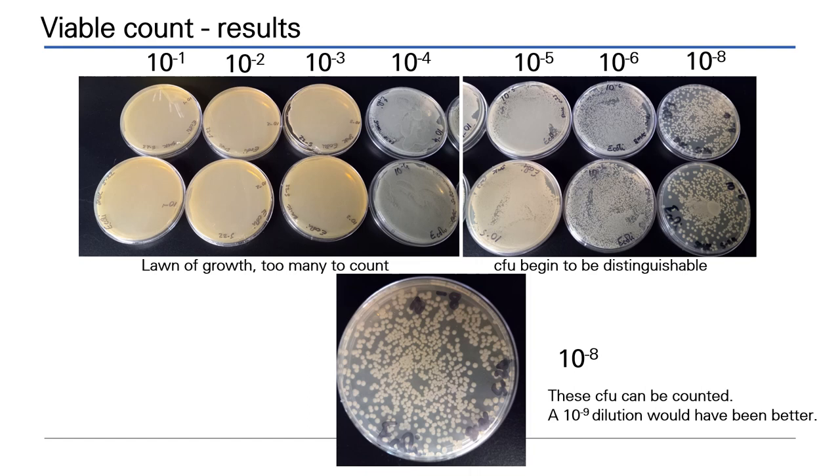These are the results of the viable count technique. We only demonstrated the dilution of the 1 times 10 to the minus 1 through 1 times 10 to the minus 3 plates. As you can see in the panel, 10 to the minus 3 still produced a lawn of growth. A lawn of growth is when all of the colony forming units are so close together and so numerous that you cannot see the individual colonies. So, the serial dilution was performed all the way down to a 1 times 10 to the minus 8 dilution.